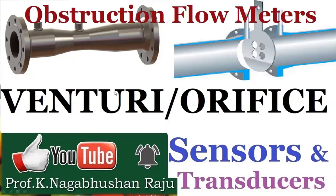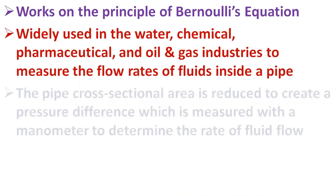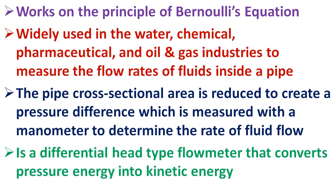A venturimeter is a type of flow meter that works on the principle of Bernoulli's equation. The device is widely used in water, chemical, pharmaceutical, oil and gas industries to measure the flow rates of fluids inside a pipe. The pipe cross-sectional area is reduced to create a pressure difference, which is measured with a manometer to determine the rate of fluid flow. So the venturimeter is a differential head type of flow meter that converts pressure energy into kinetic energy.